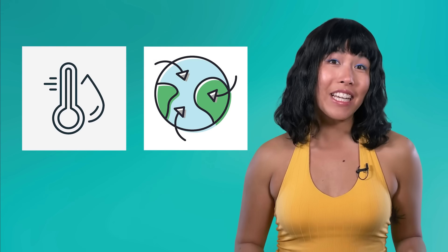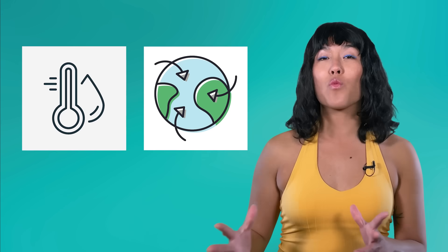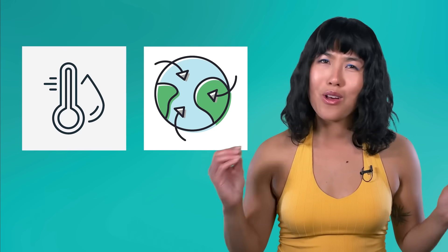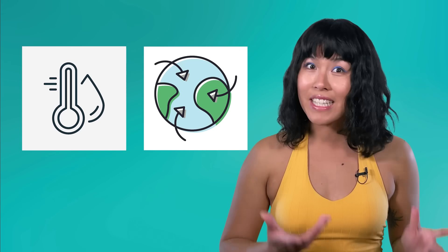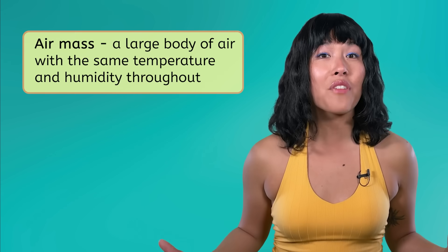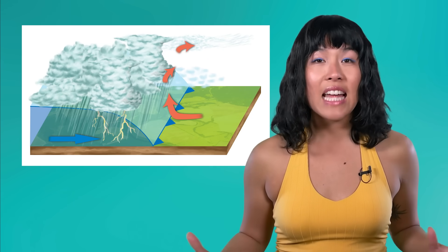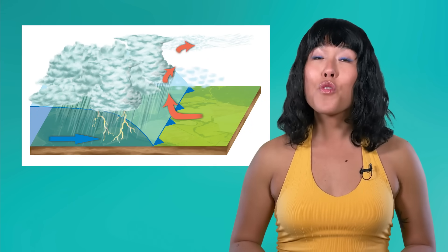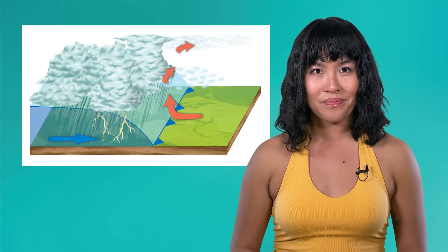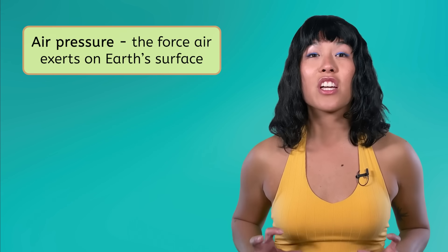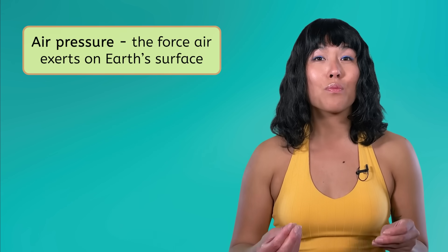We already know that weather is influenced by factors like humidity and temperature, and that global patterns of circulation and heat transfer cause huge amounts of air to move around the planet. Now let's put this all together to talk about how these changes really happen through air masses. An air mass is a large body of air with the same temperature and humidity throughout. They can be thousands of miles across and several miles deep, and they are moved around Earth's surface by global wind patterns.